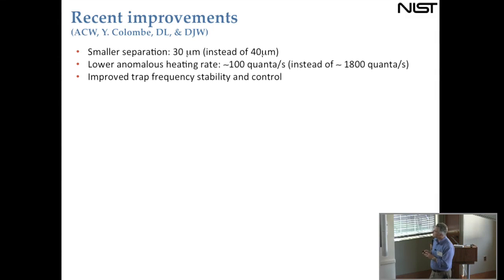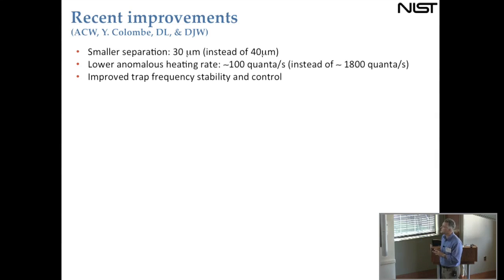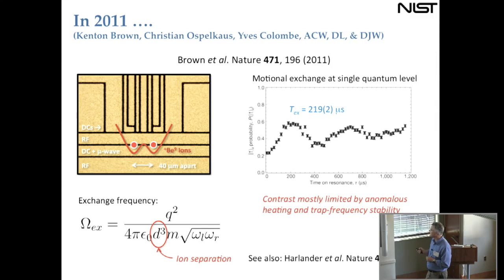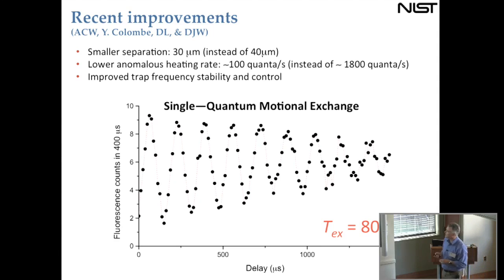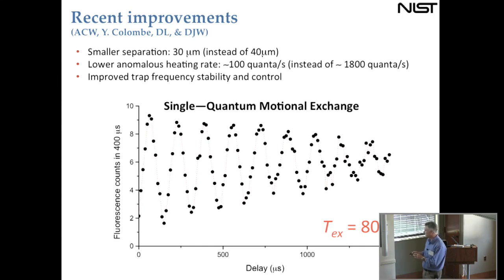We've also improved trap stability and control by maintaining clean electrodes on the surface to avoid charging from laser beams and updating electronics. Before, we could see limited contrast in the flopping; now we see much cleaner oscillations. Even a relatively small change in separation makes a large difference to the exchange rate. The decay of contrast visible in the data is due to slight drift of the two wells out of motional resonance over the few minutes needed for 20,000 experiment repetitions.